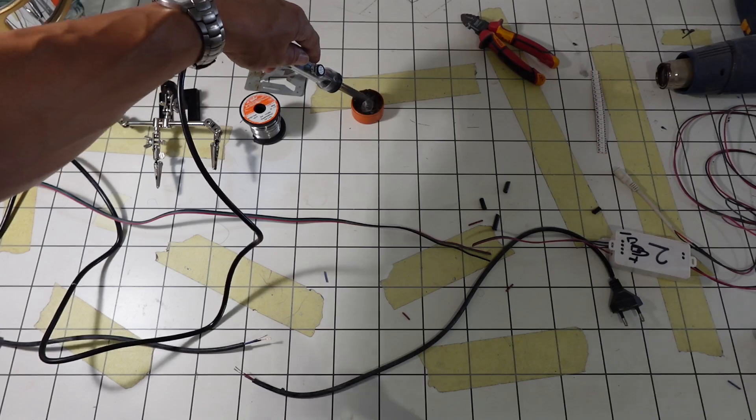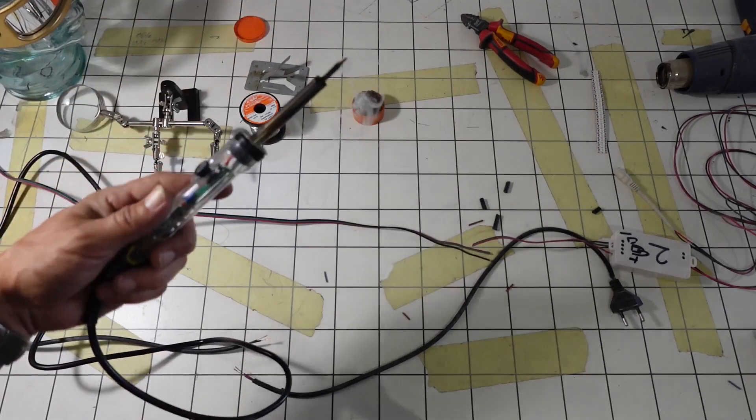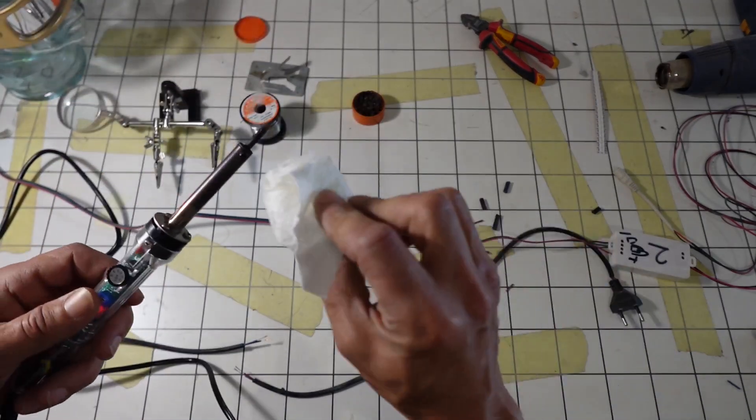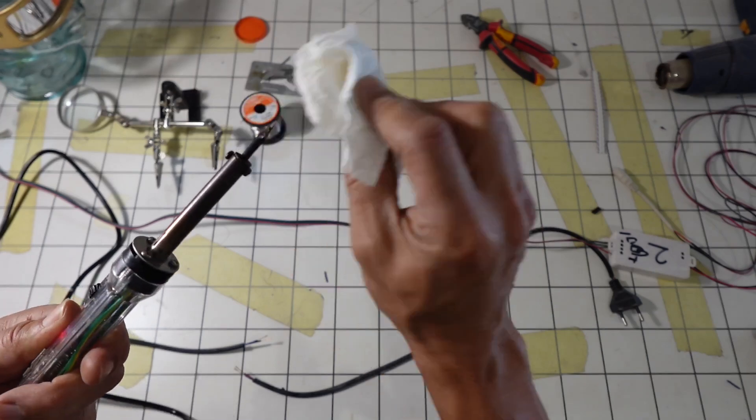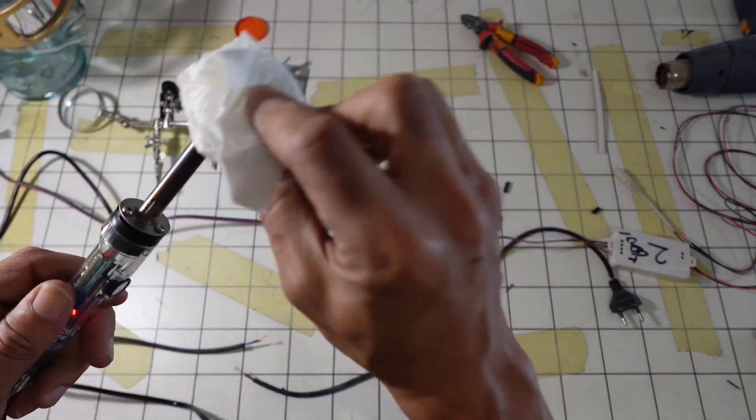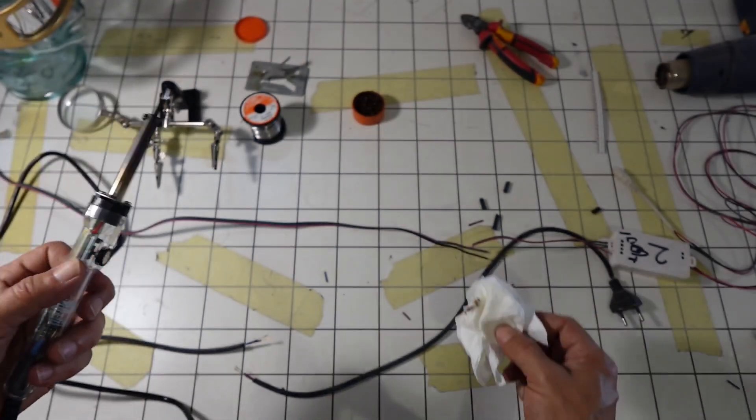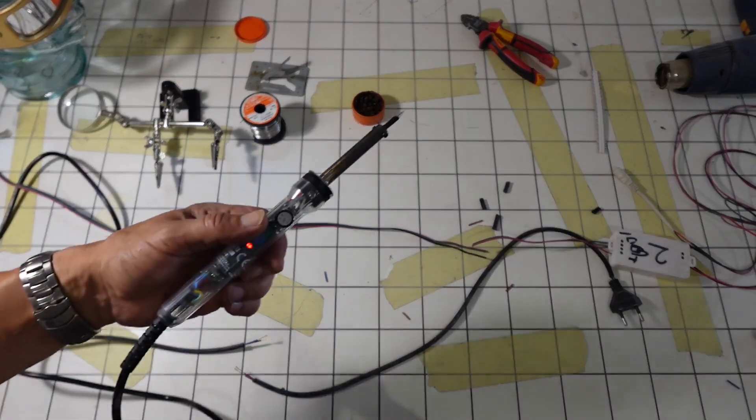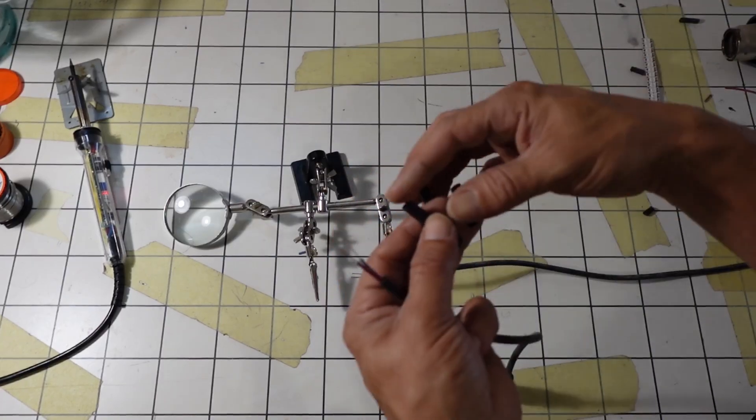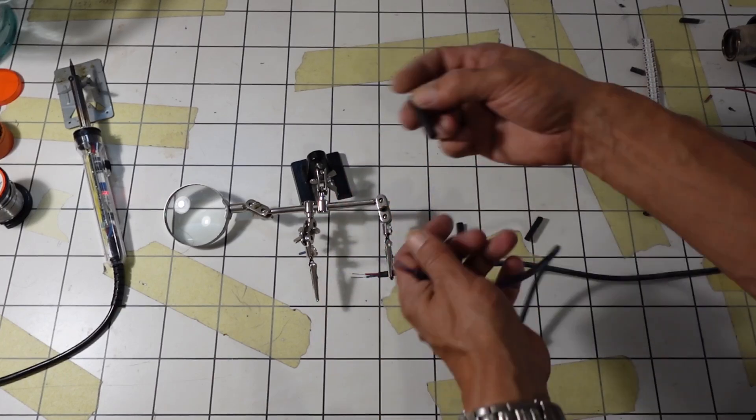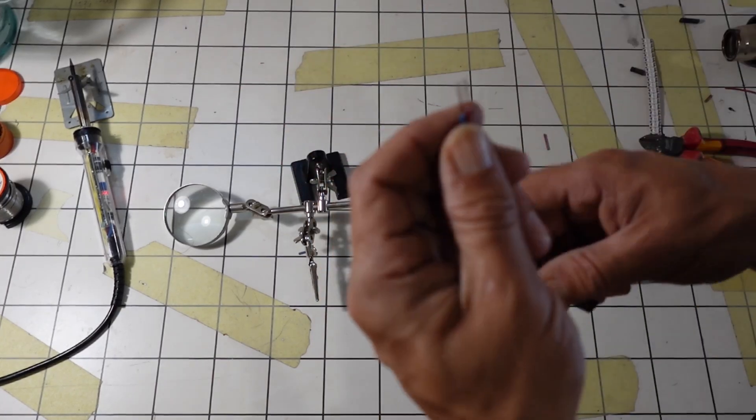So again, once heated up, some fluxing—and as you can tell, definitely make sure to have proper ventilation. To clean, I just use a bit of a wet rag, nothing abrasive, so you have a nice clean tip. Then again flux, and you can really start soldering. Make sure to slide on your heat tubes before you do the soldering.